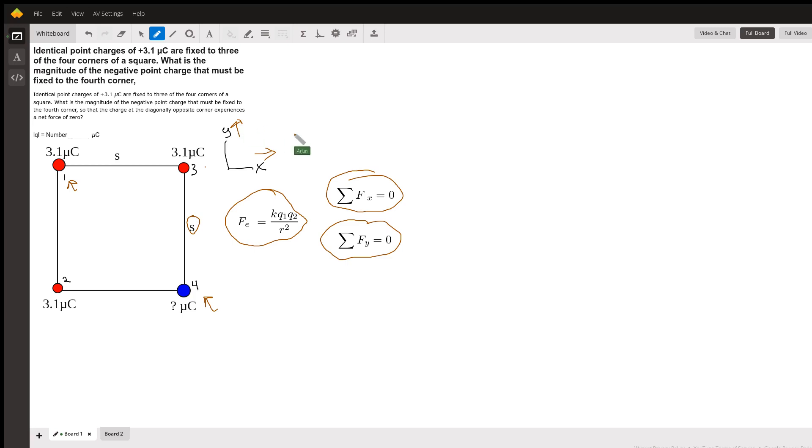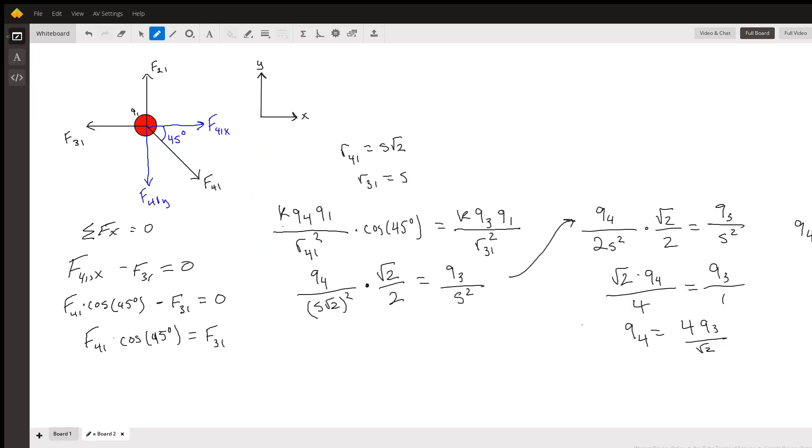With all this in mind, we can bring our attention to the sum of forces in the x direction. We'll draw a free body diagram of charge q1 here in the top left. The force that charge three exerts on one will be directed in the negative x direction, straight to the left.